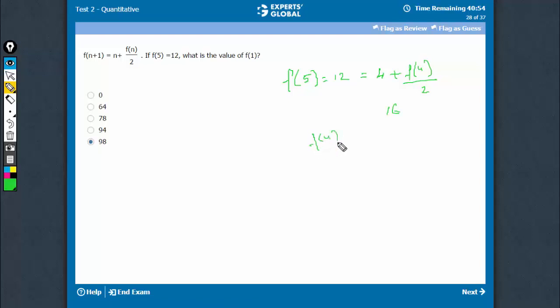F4 is equal to 16 is equal to F3, and now N becomes 3. 3 plus F3 upon 2. So 16 minus 3, 13 into 2, 26. F3 becomes 26.